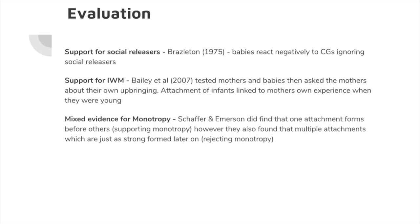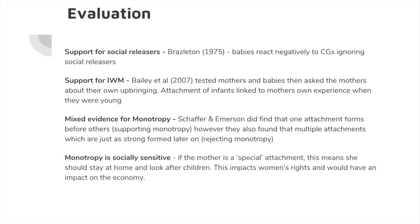There's mixed evidence for monotropy. Schaffer and Emerson kind of suggested it did exist — infants getting one key attachment is like monotropy — but they also rejected it because later infants had multiple attachments, going against Bowlby's idea. The idea of monotropy is also socially sensitive. If we're saying one attachment is key and that's generally the mother, then you'd be saying mothers can't work — they have to stay at home. What does that mean for the gender pay gap? What does it mean for women who don't want to do that, or men who want to stay home as house husbands? It produces quite current issues you can use as evaluation.